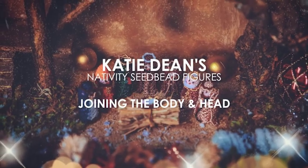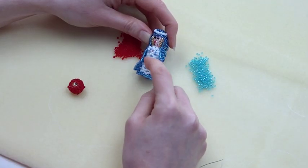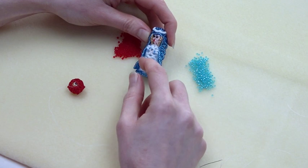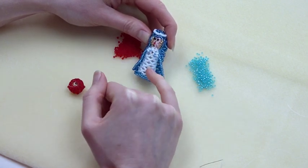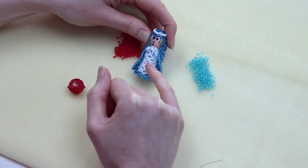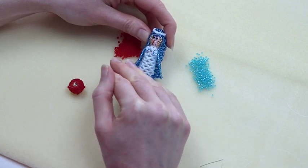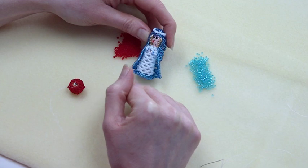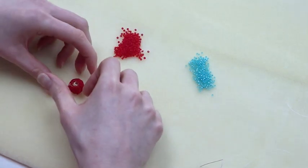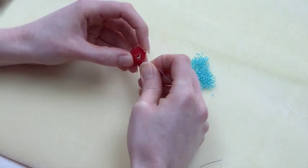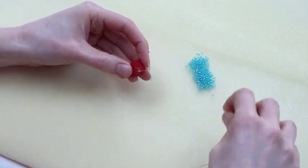Okay, so next up, I wanted to show you how we join the body onto the head. So I've got Mary here, you can see her little head, you can see the body extending down, and this is actually exactly the same for all the figures, so it's quite nice because once you've learned this technique, you're just going to use it over and over again. So let's put Mary to one side, get my nice red head from last time.